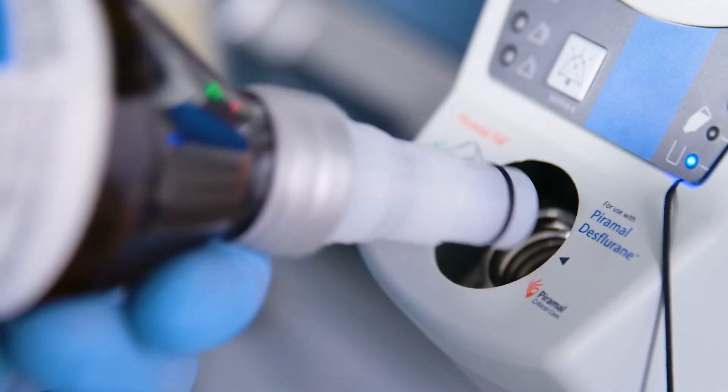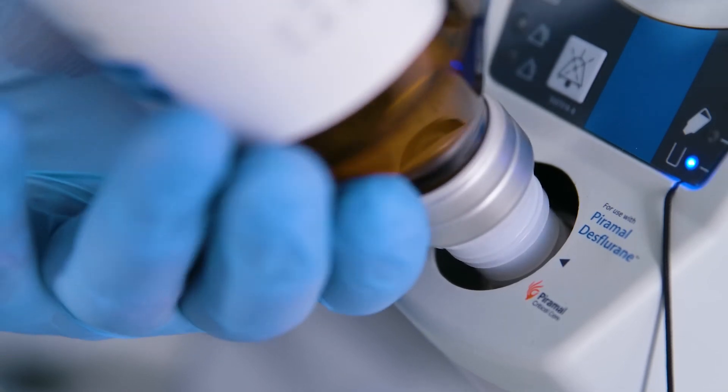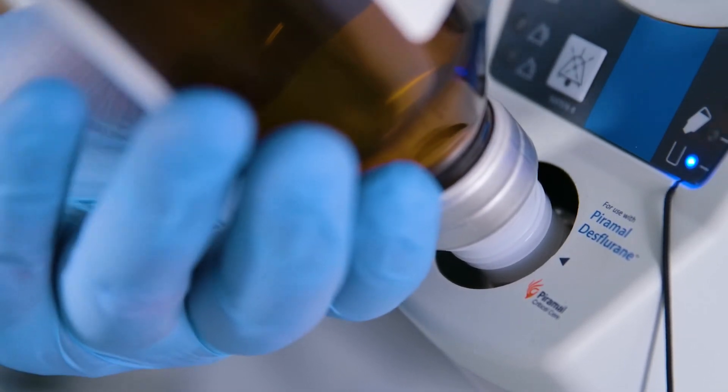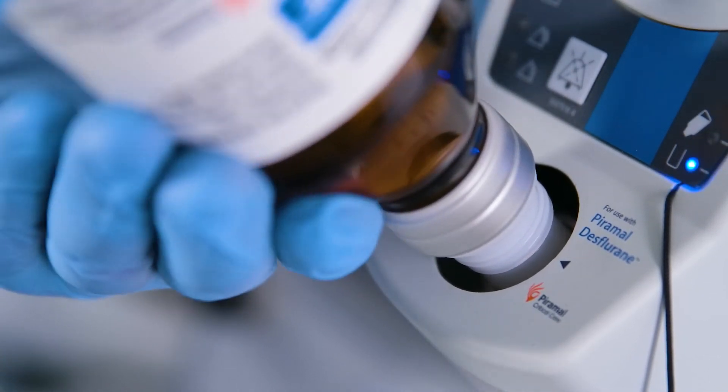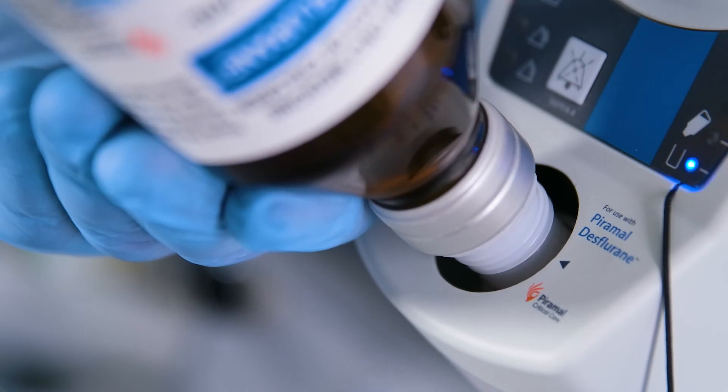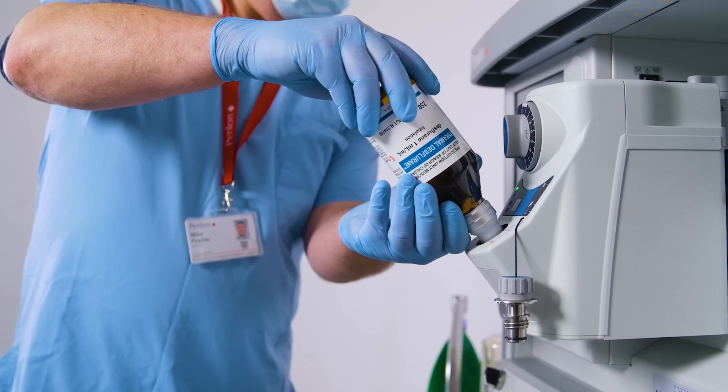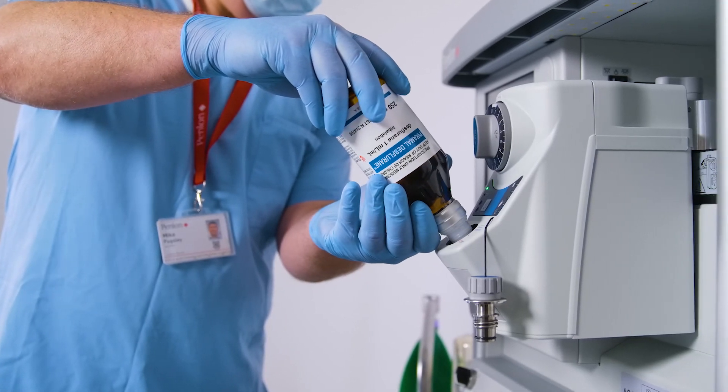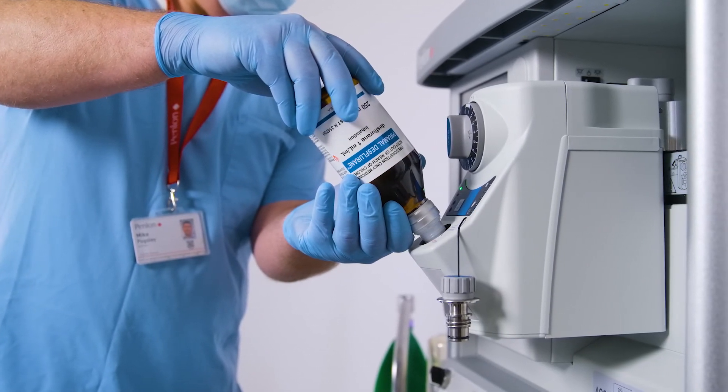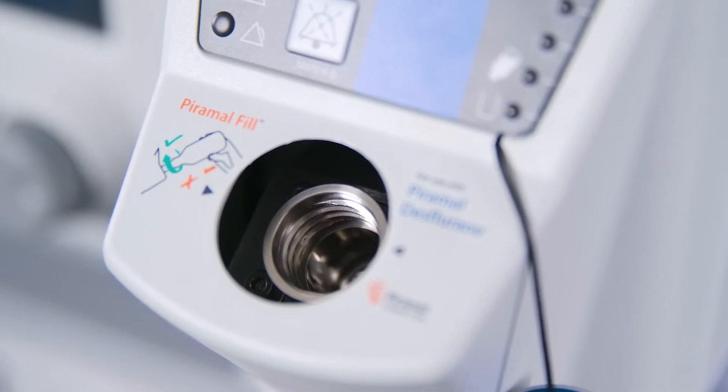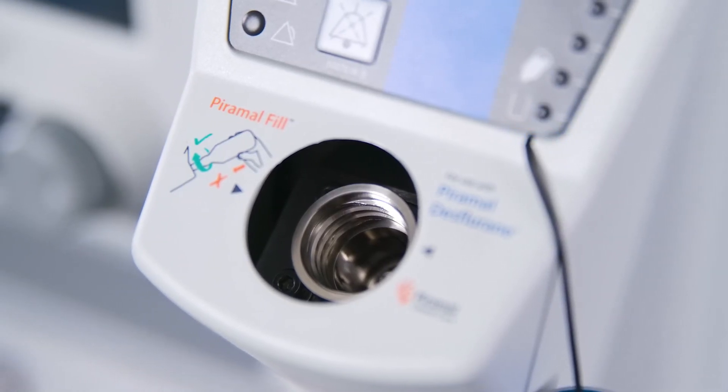Carefully insert the bottle nozzle into the filler port and rotate the bottle slowly clockwise. Do not use excessive force. Normal resistance should be felt as you rotate the bottle. Check that the threads on the bottle nozzle have engaged with the threads inside the vaporizer filler port without cross-threading. Cross-threading may cause the valve in the bottleneck to open prematurely.